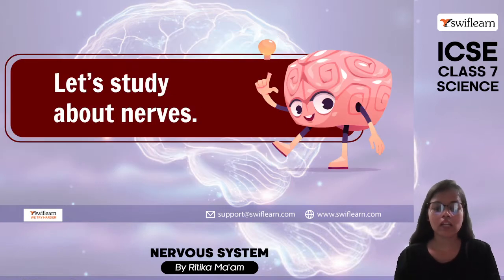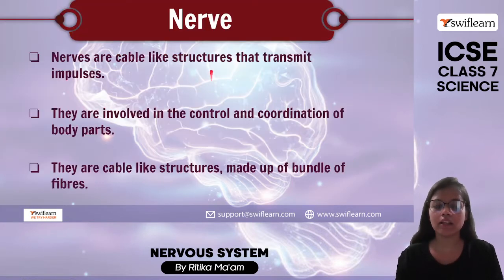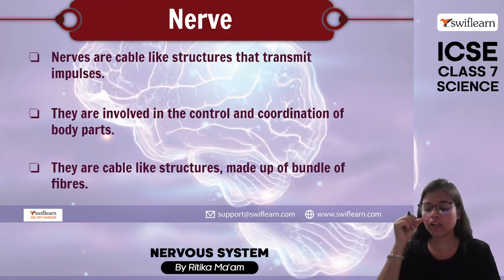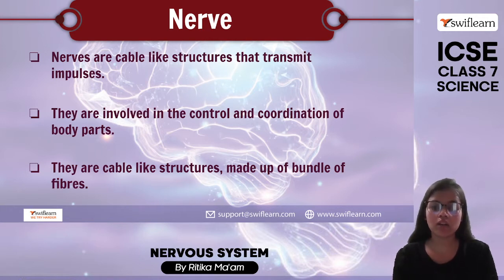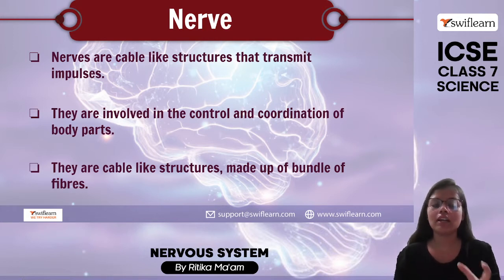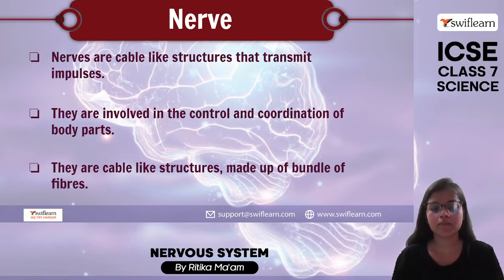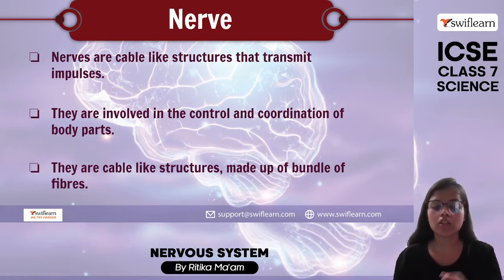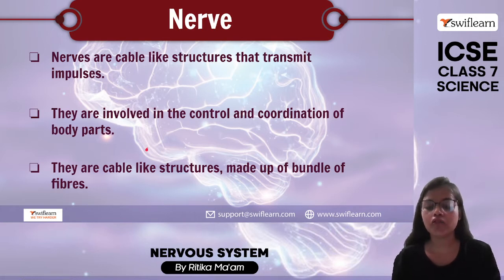Now let us study a bit about nerves. Nerves are cable-like structures — just as we have electric cables which are used to transmit signals, similarly we have nerves. These are cable-like structures that transmit impulses and are involved in control and coordination of our body, and they are made up of bundles of fibers.